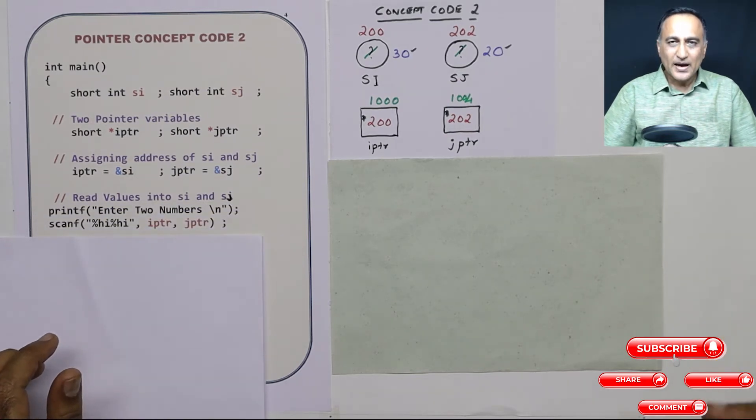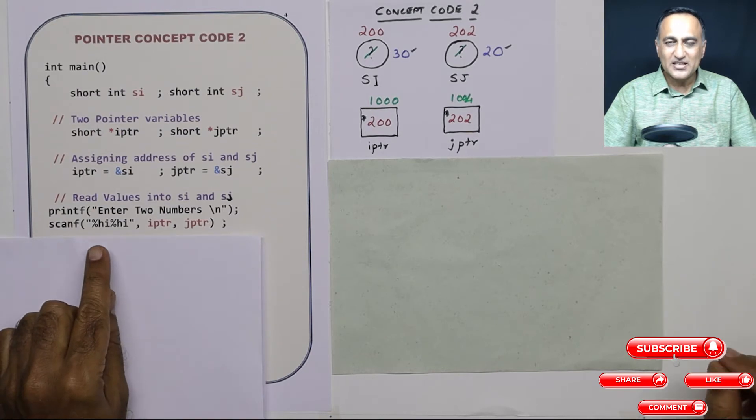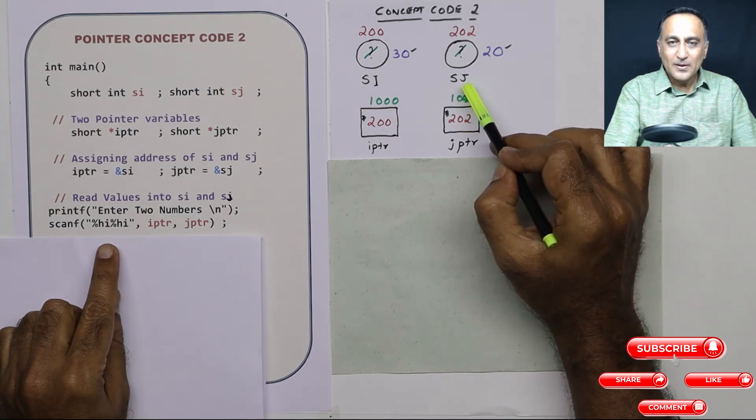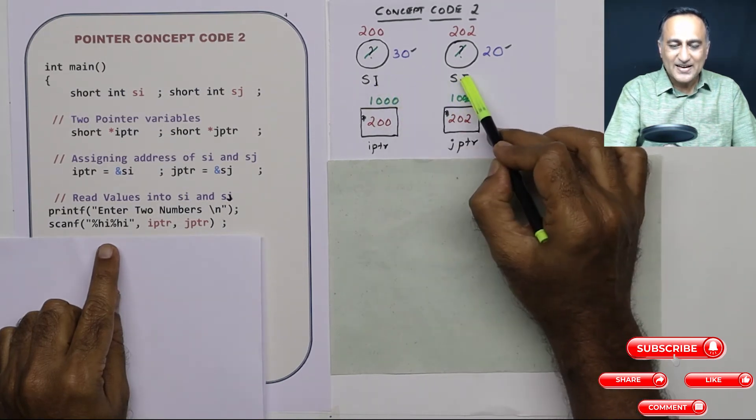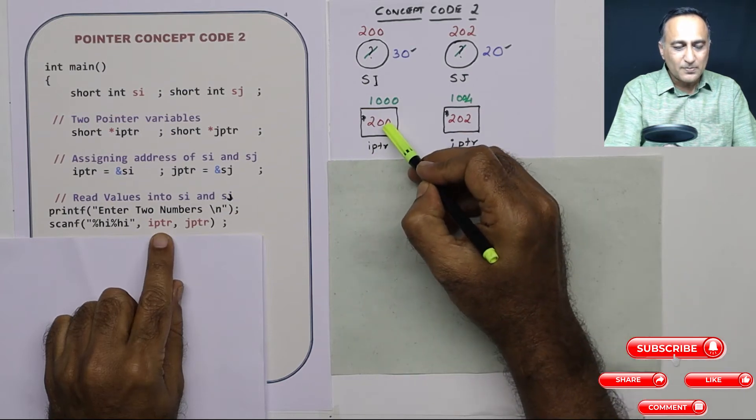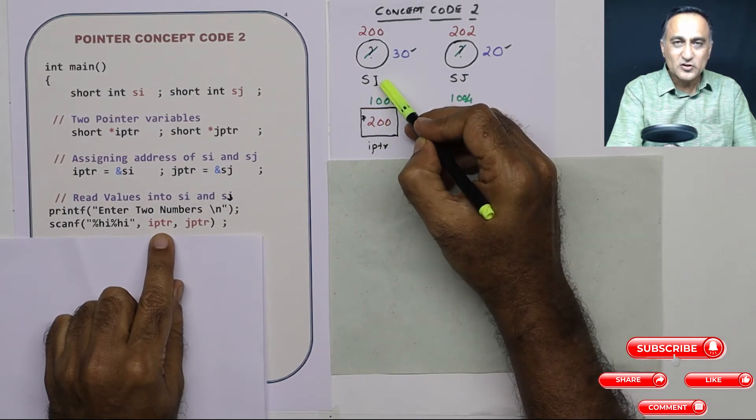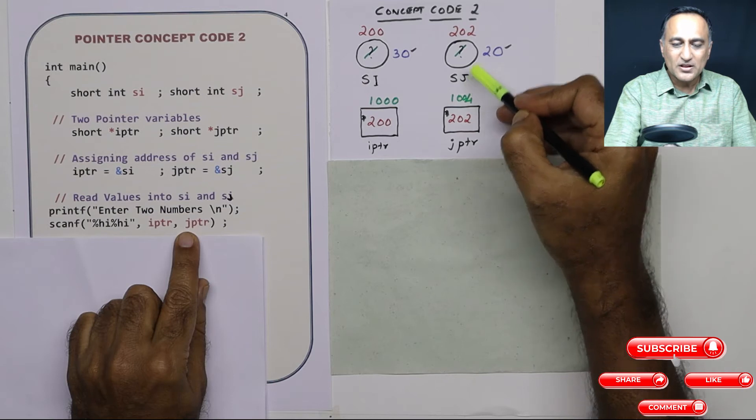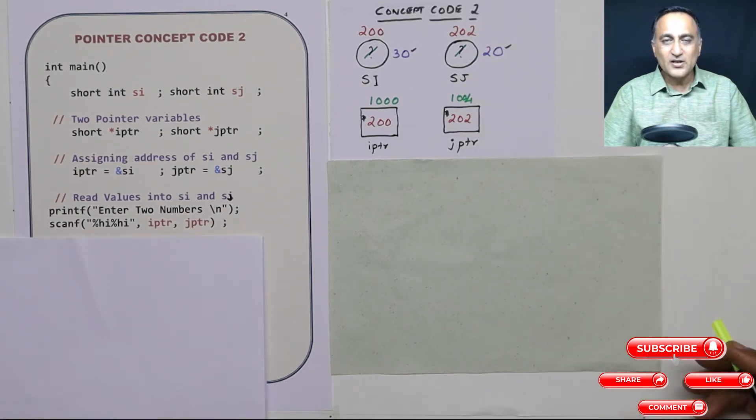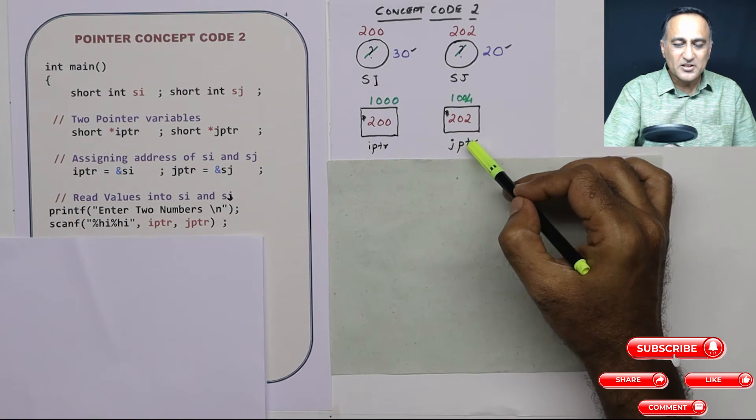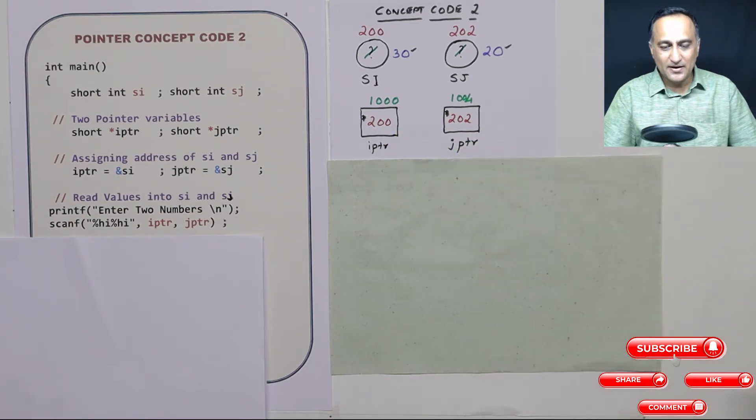Now let's come to the next step. Let us assume I am going to ask the user to enter two numbers. Normally what I would do is I would say scanf %hi %hi address of SI address of sj. But I already have the address of SI and sj in IPTR and JPTR. So if I simply say IPTR, IPTR will be replaced with 200 which happens to be the address of SI. And if I say JPTR, it will be replaced with 202 which happens to be the address of sj. So in scanf instead of reading SI and sj addresses, we are using IPTR and JPTR because they represent the address of SI and sj.